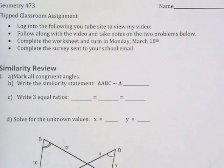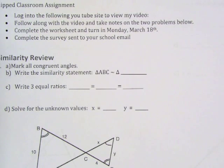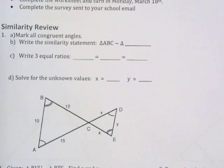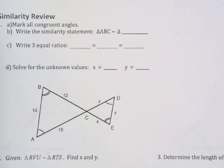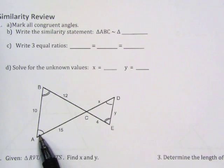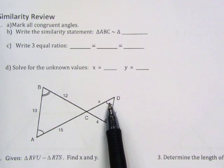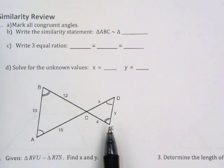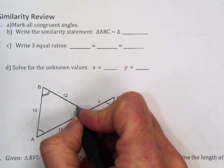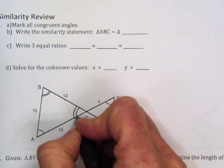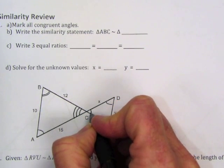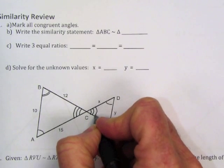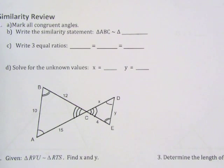We'll start with number one. The instructions tell us to mark all congruent angles in the figure given. If you look down in the figure, two pairs of angles have already been marked congruent. So angle A is congruent to angle D, and angle B is congruent to angle E. We know that the vertical angles at C are also congruent, and this is going to help us build our similarity statement.